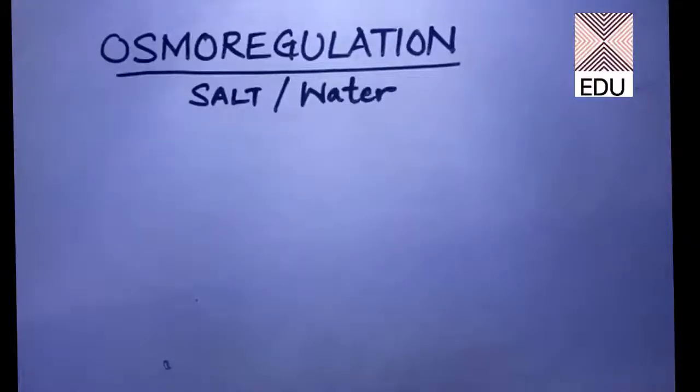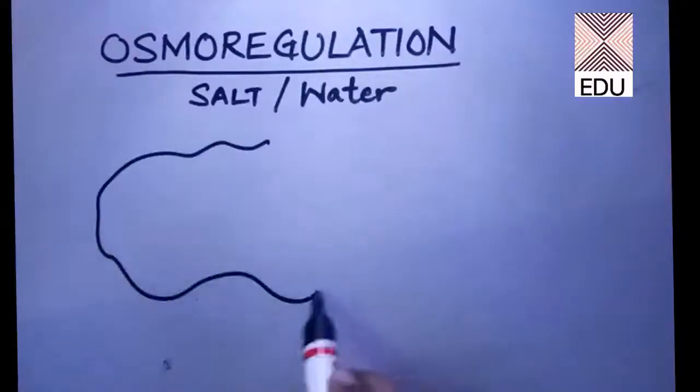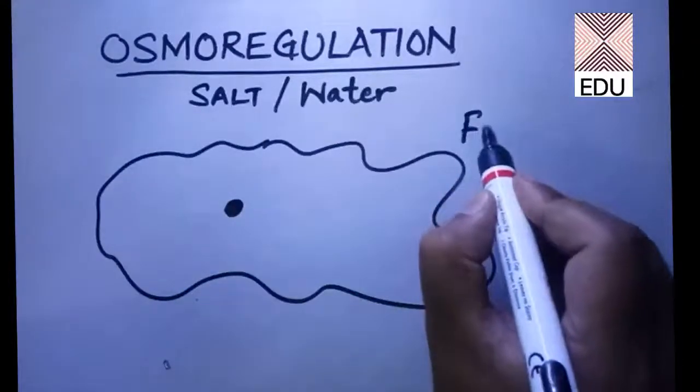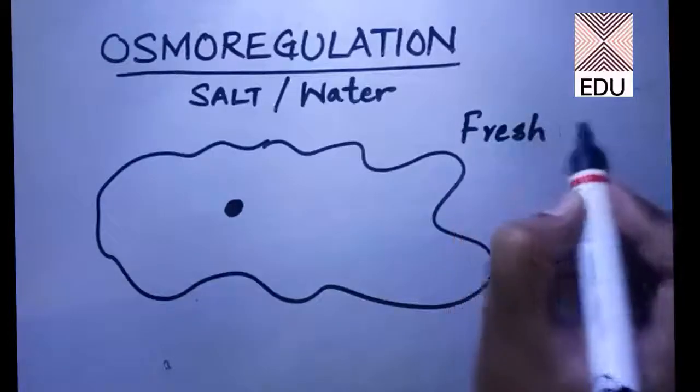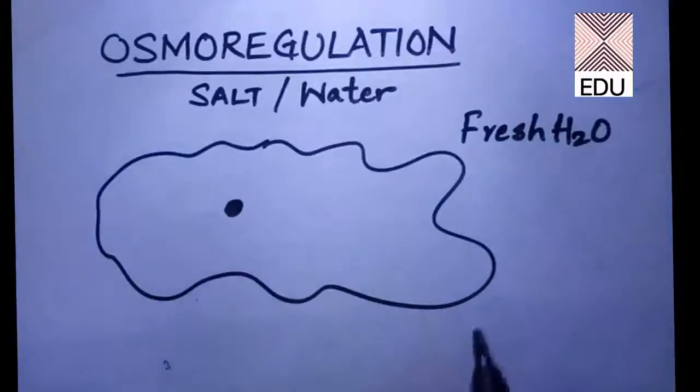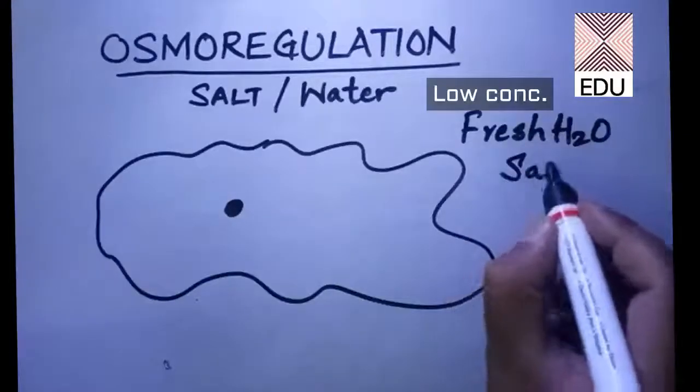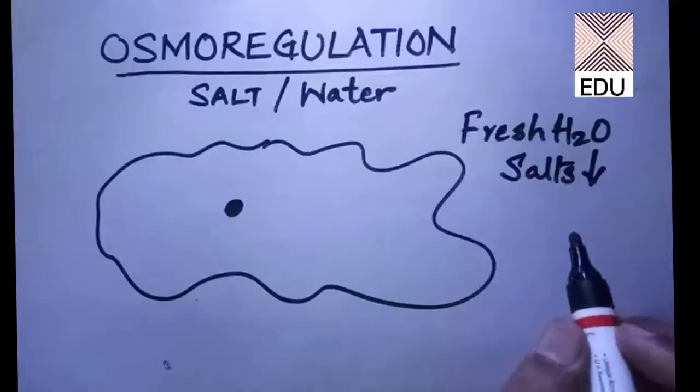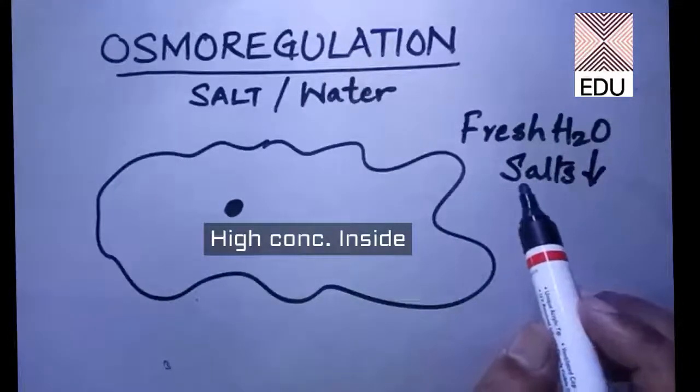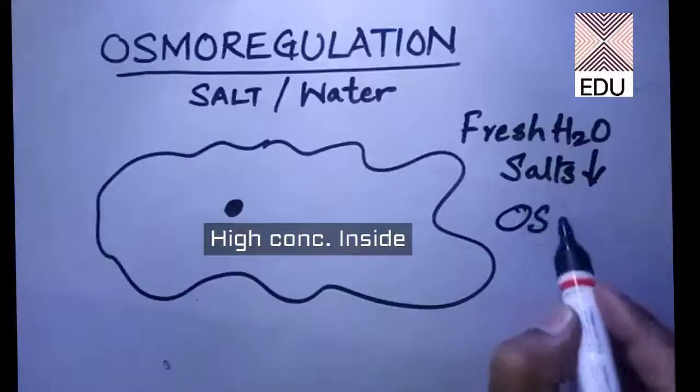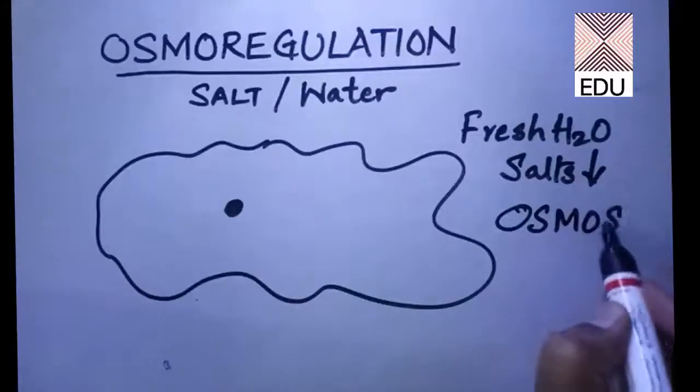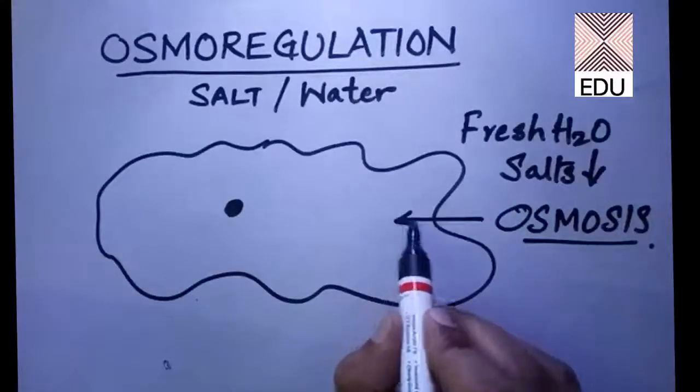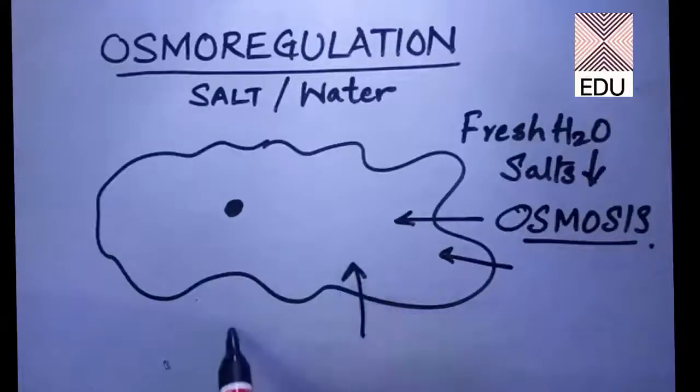Now amoeba is living in fresh water. Fresh water has a very low quantity of salts. So what happens with osmosis? With the process of osmosis, this water is coming inside the body of the amoeba.